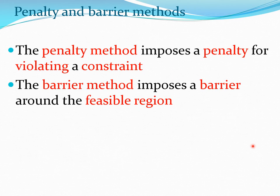There are two different approaches. The penalty method tries to impose a penalty for violating a constraint, whereas the barrier method puts a barrier around the feasible region, keeping you inside the feasible region and preventing you from going into the infeasible region. Based on these two thinking patterns we get two different methods.